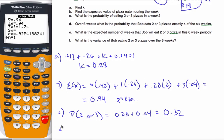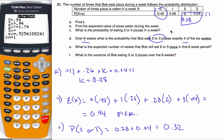Dino says, over six weeks, what's the probability that Bob eats two or three pizzas exactly for the six weeks? Now, I've changed the question now. I'm looking at this probability distribution for six weeks, and I know I either eat two or three pizzas or I don't.